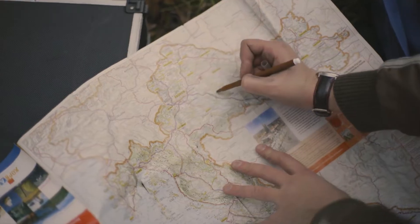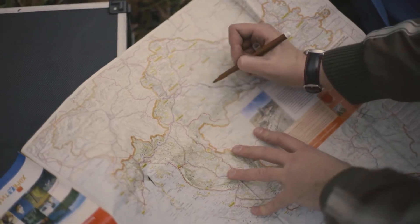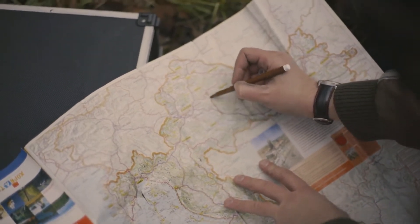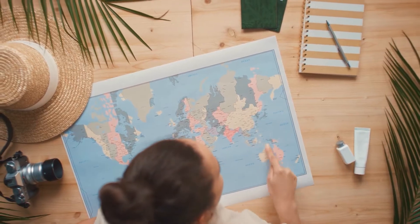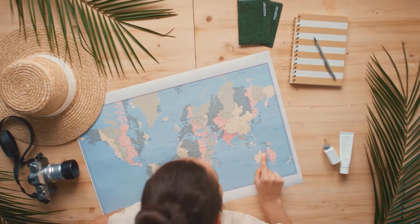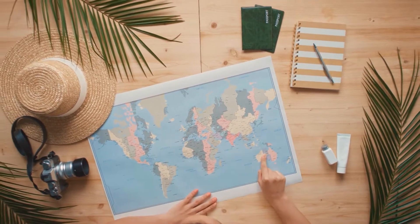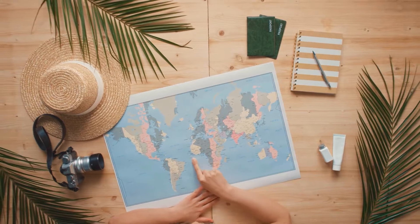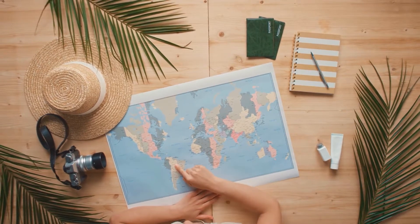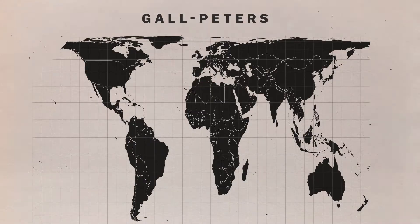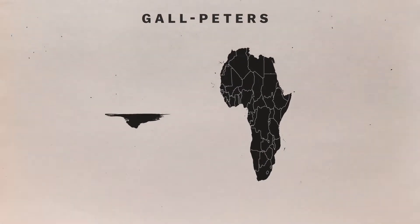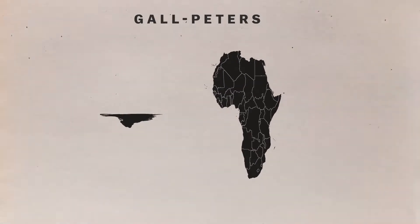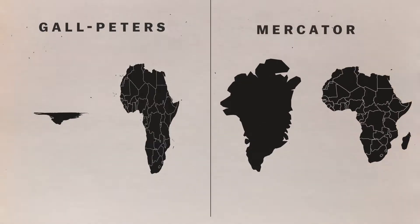The particular projection you choose to use on a map matters for what you're trying to show. For instance, an accurate scale is more important if you need to compare distances or plot out flight paths between two points that are far apart. An equal area representation will be more accurate if you need to compare the different sizes of different landmasses, and so on.